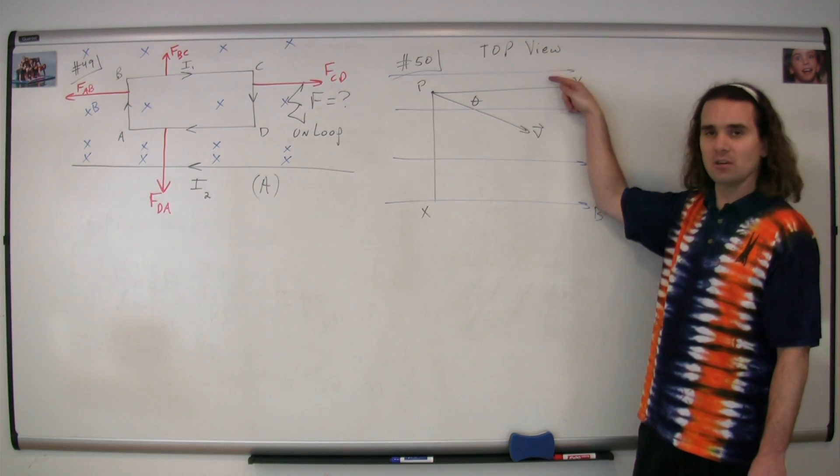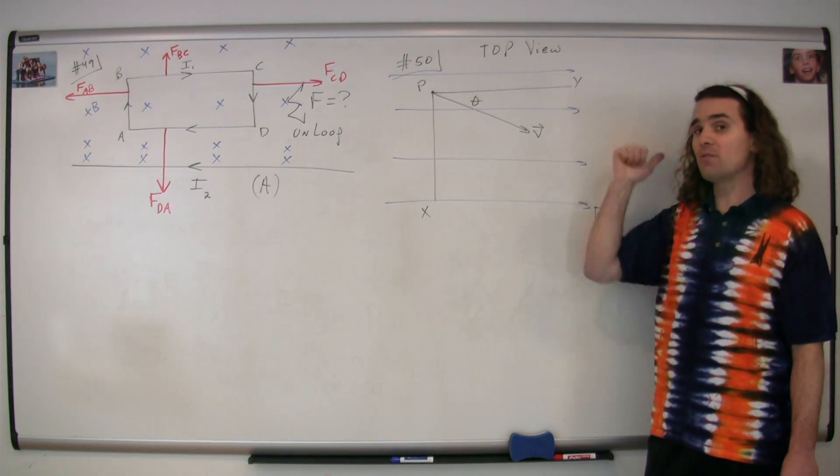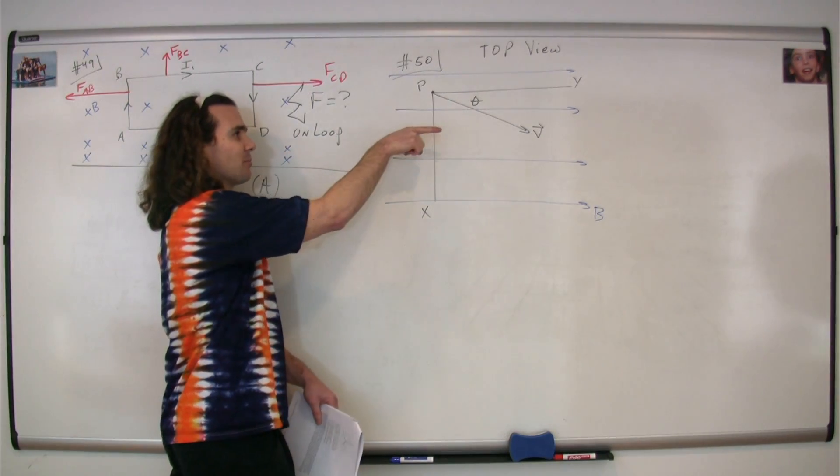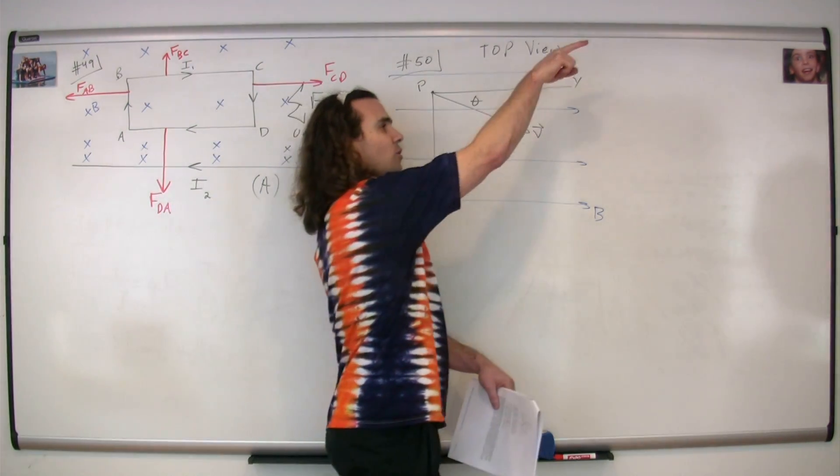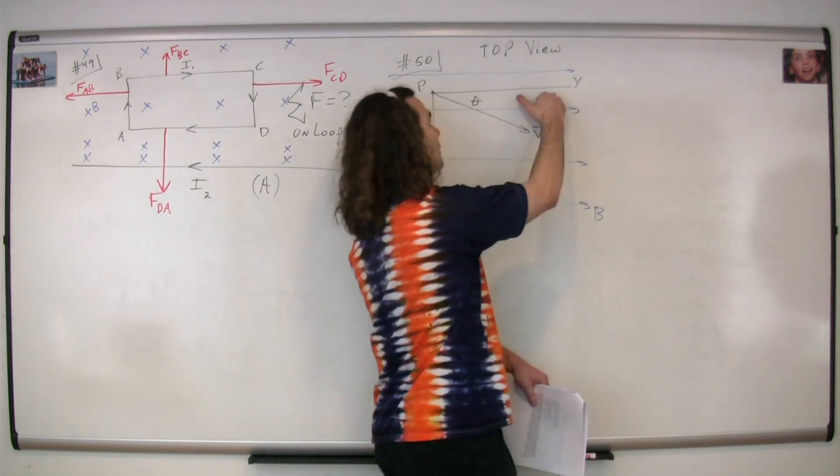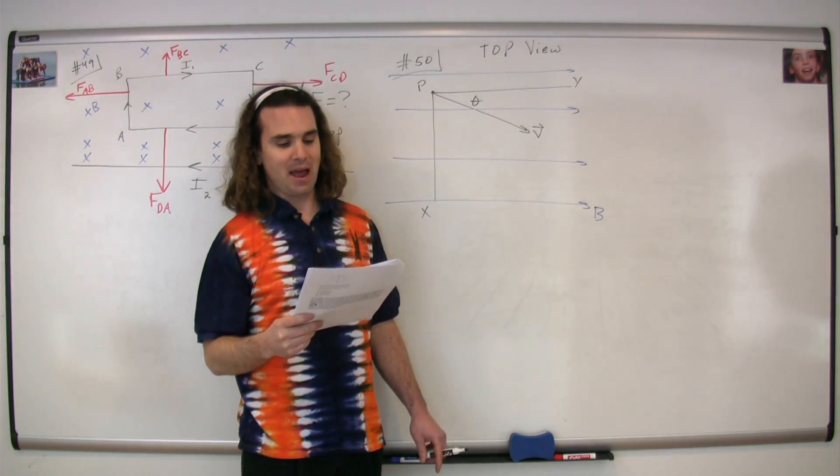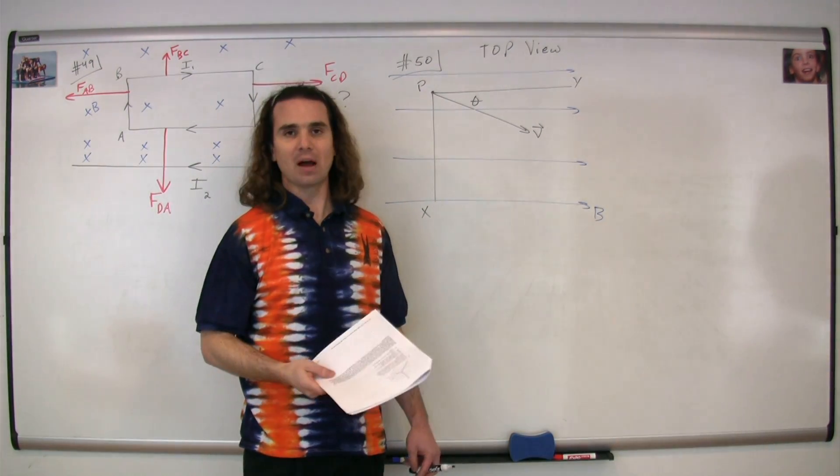So, it's going to move in a circle like this while continuing to move at a constant velocity in the y direction, which means it's actually going to look something like this. It's going to go in some sort of helical path around the y axis. So, the correct answer is D, a helical path with its axis parallel to the y axis.